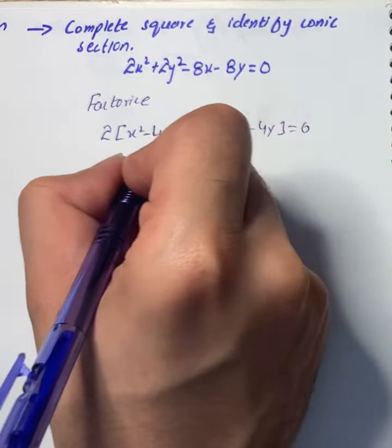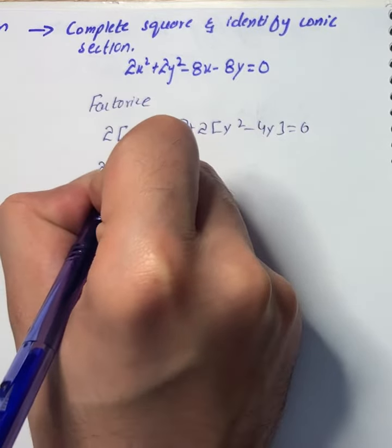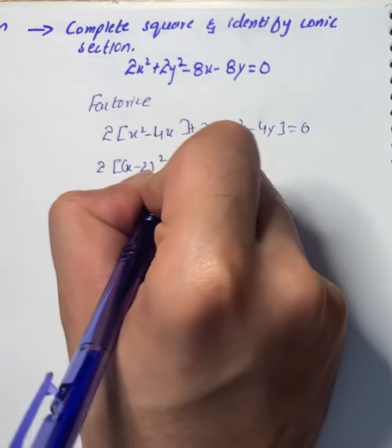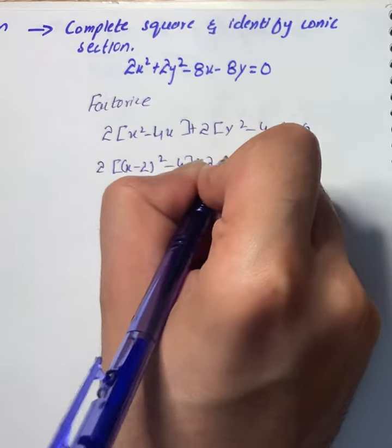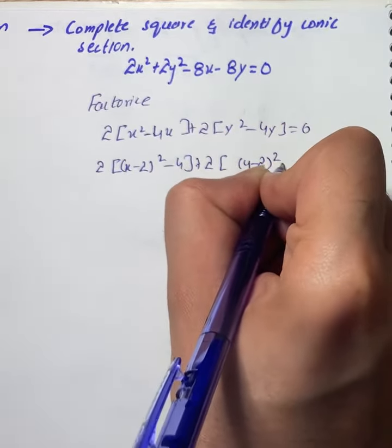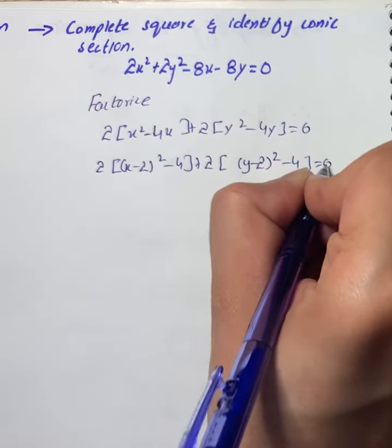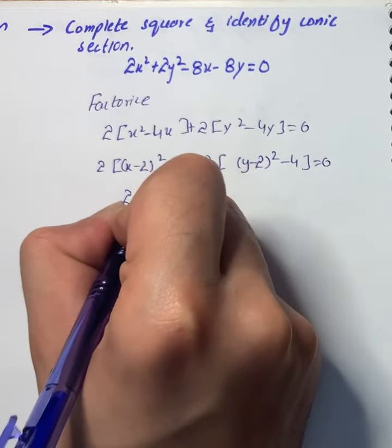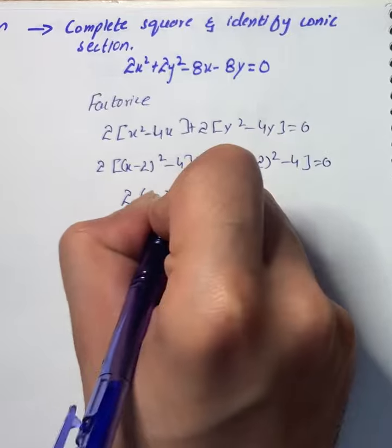That turns out to be 2 into (x - 2)² - 4 plus 2 into (y - 2)² - 4, that is equal to 0.